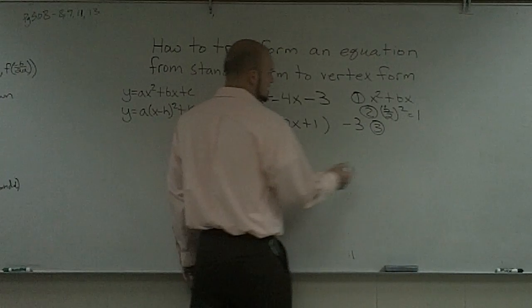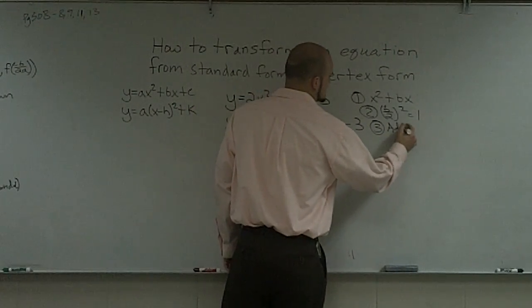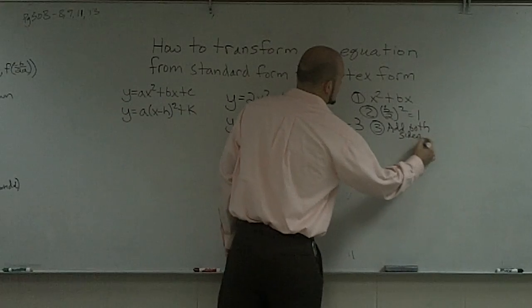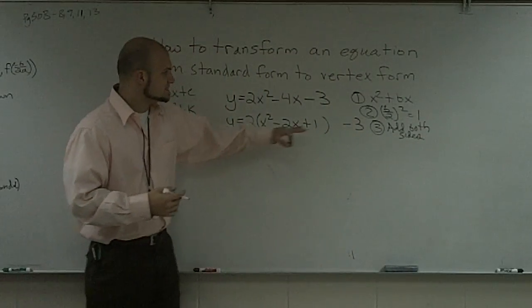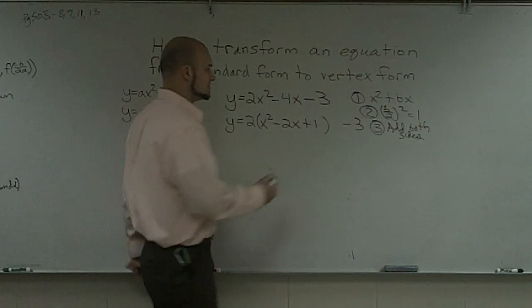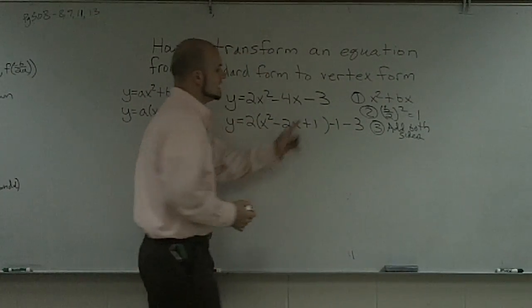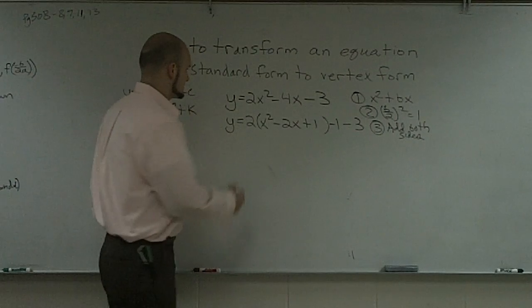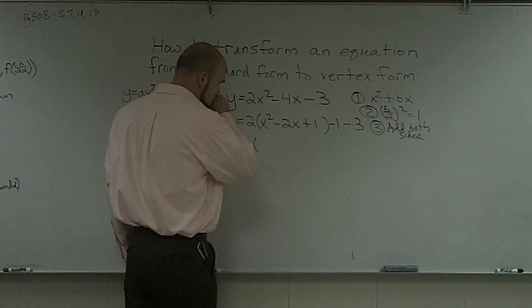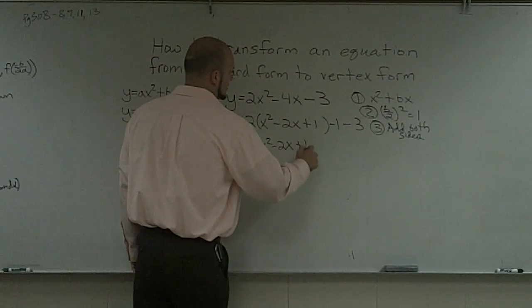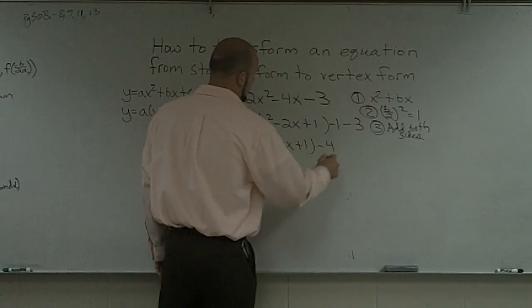Then step number 3 is to add to both sides. Now rather than adding to both sides, I'm just going to add and subtract 1 on the same side, because adding and subtracting to the same side is the same thing as adding to both sides. So I have y equals 2(x squared minus 2x plus 1) minus 4.